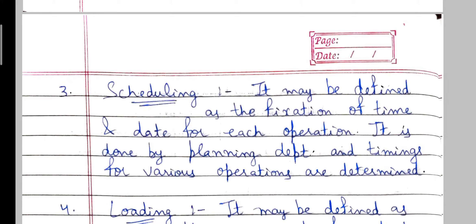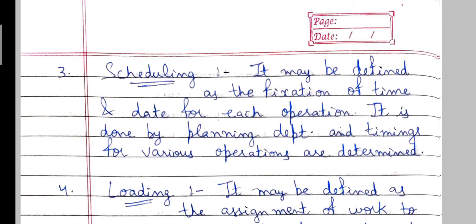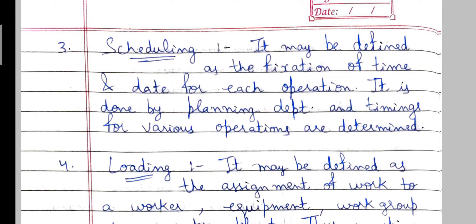The next function of production planning and control is scheduling. It may be defined as the fixation of time and date for each operation. Now that we have decided the sequence of operations under routing, we have to fix the time and date for each operation to be done. It is done by the planning department, and timings for various operations are determined.